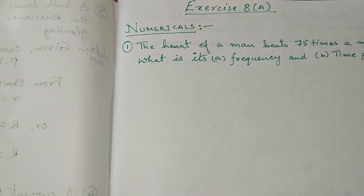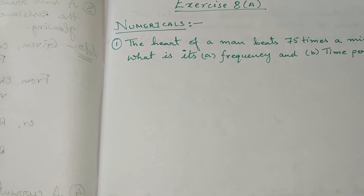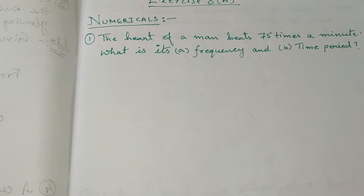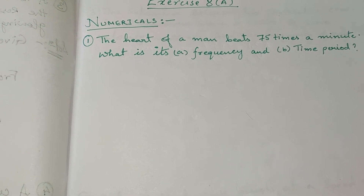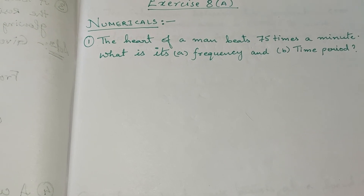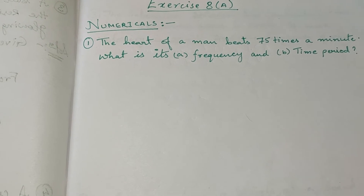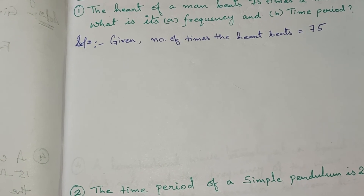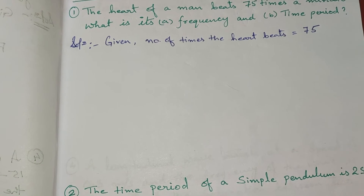Hello everyone. In this video, we would be solving the numericals of chapter 8, that is propagation of sound waves. The first question says the heart of a human beats 75 times a minute. We have to find the frequency as well as the time period. We write all the given things: the number of times the human heart beats is equal to 75.